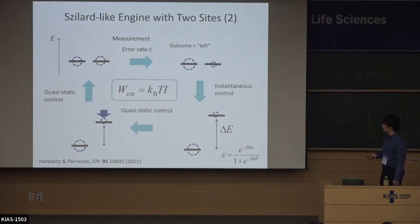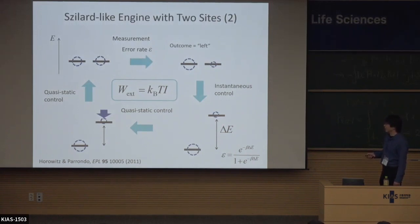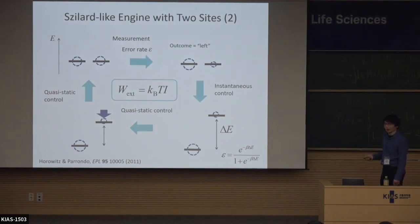We push up the right energy level, but not to infinity, because if the particle is actually in the right side then pushing the energy level to infinity would require infinite work. So we stop this energy level at some appropriate point, then very, very slowly push down the right energy level to the original position. By this cycle, the extractable work is a function of the error rate and this energy level delta E. We optimize this energy level delta E and find that in the best case, the work extraction equals the mutual information.